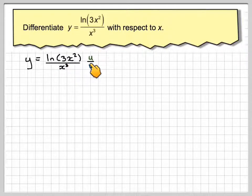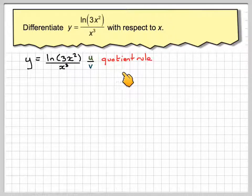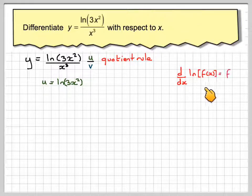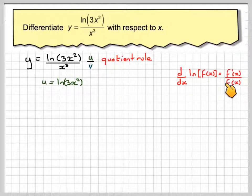This is type u over v, which means we must use the quotient rule. We're going to let u equal ln of 3x squared. Remember, if you differentiate ln of a function of x, it's f'(x) over f(x), so it's a matter of knowing the rules.